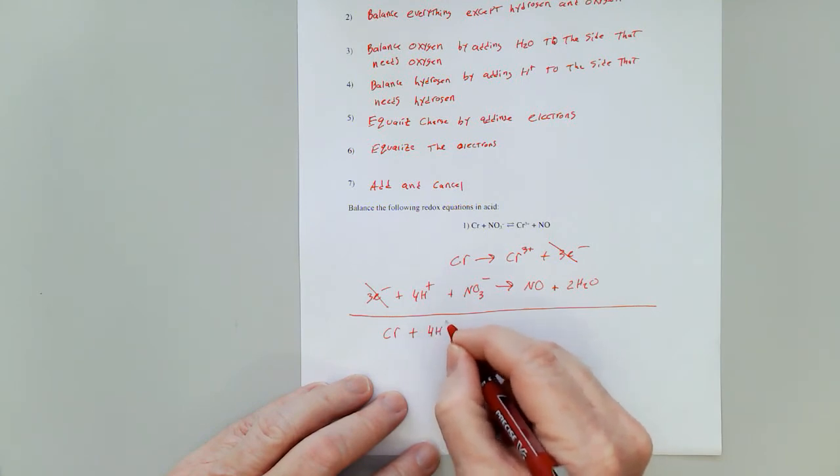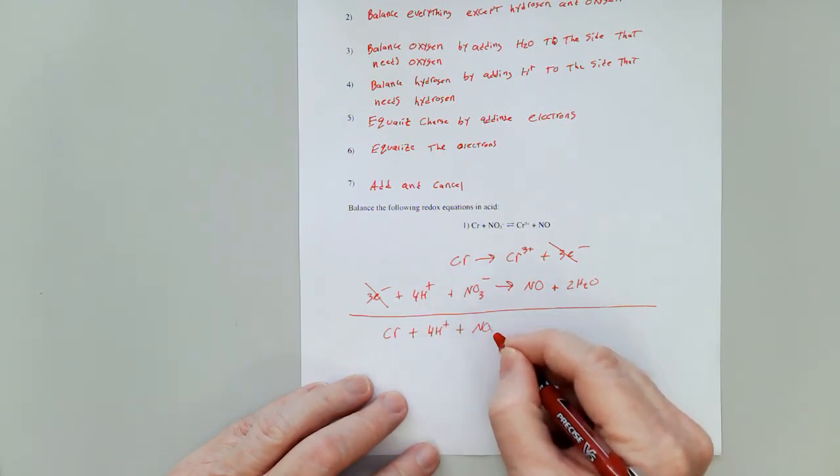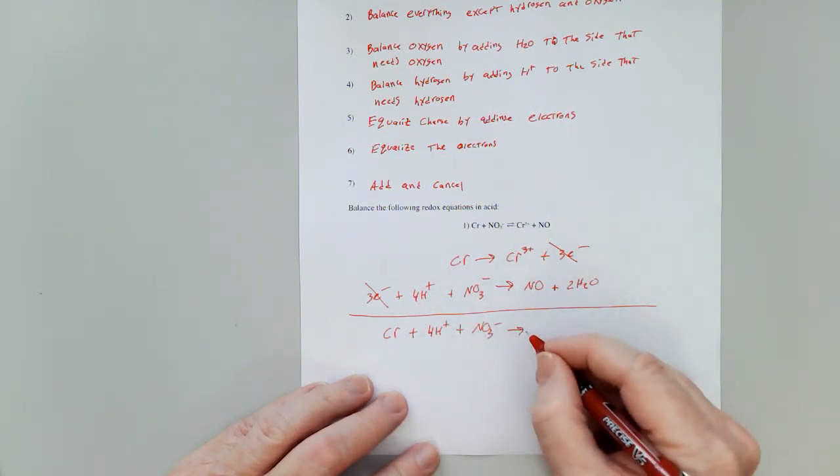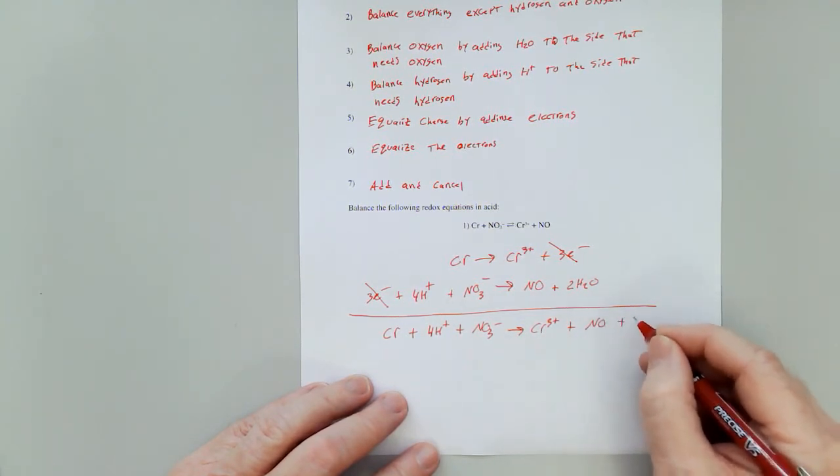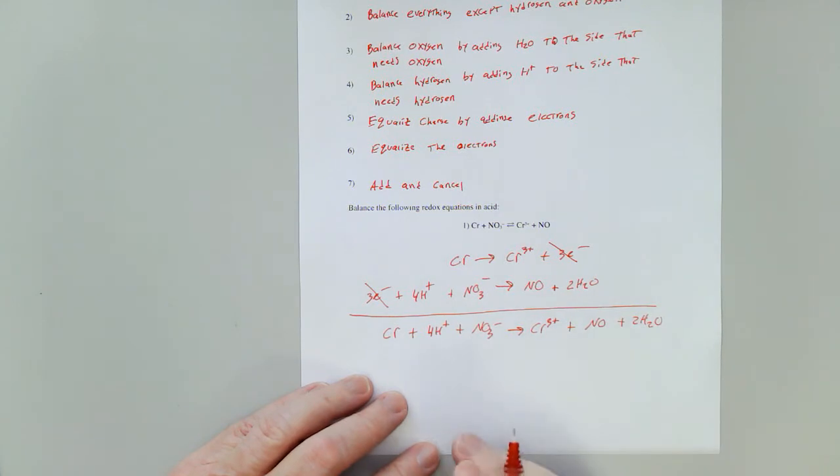Cr plus four H+ plus a nitrate gives me Cr3+ plus NO and two H2O's.